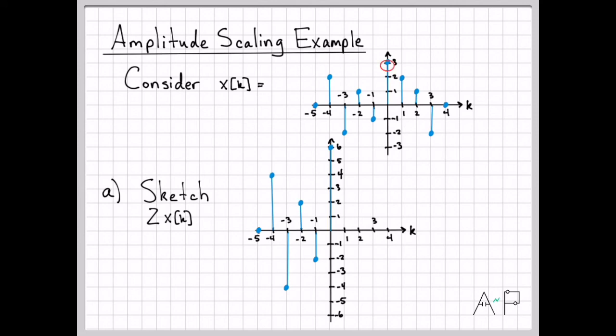At time 0, we had a value of 3 previously. 2 times 3 is 6, so now we have a value of 6 there. And you just keep going on multiplying by 2 at every point along the time axis. So pretty straightforward.